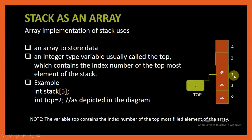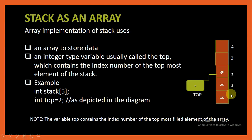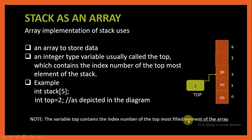Top will contain the index number of the topmost position of the stack. So the topmost position index number is 2, and top will contain 2. To create a stack we need an array — we have given the name stack to it, and it has size 5 with elements from index 0 to 4. At the current position top is 2, and the variable top contains the index number of the topmost filled element of the array.